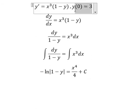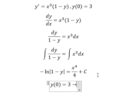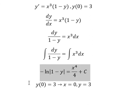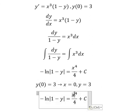Now we have the condition: when x equals 0, y equals 3. So we can find the value of C. We put 0 in here, 3 in here.